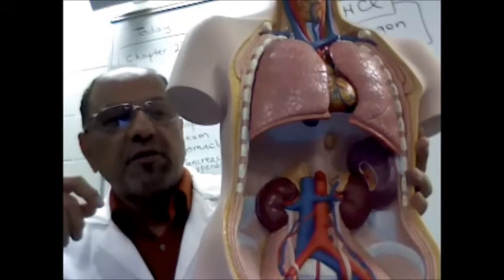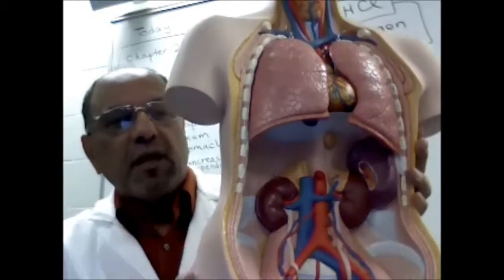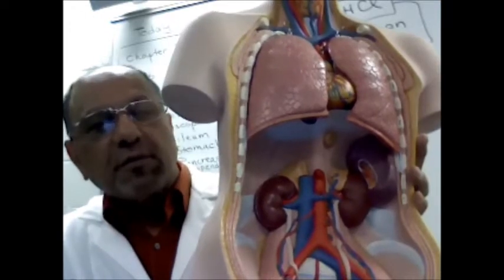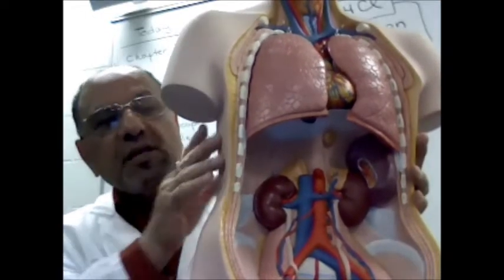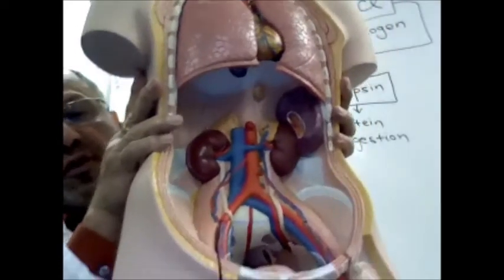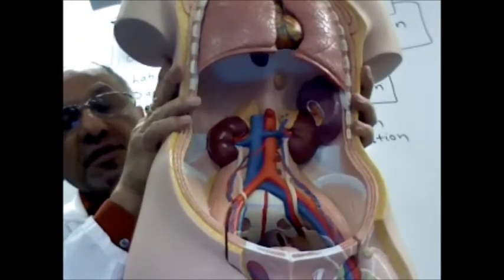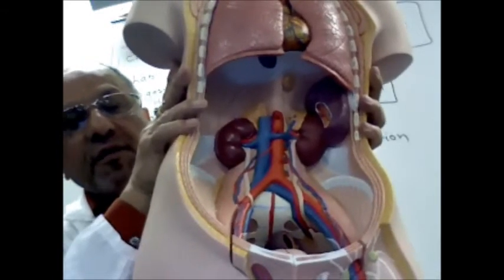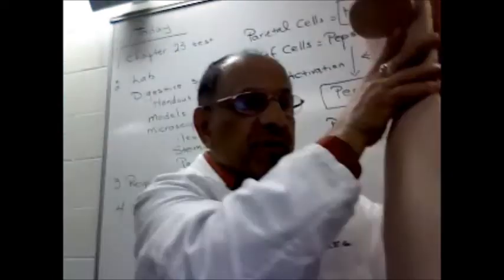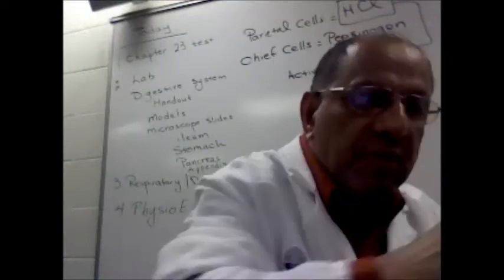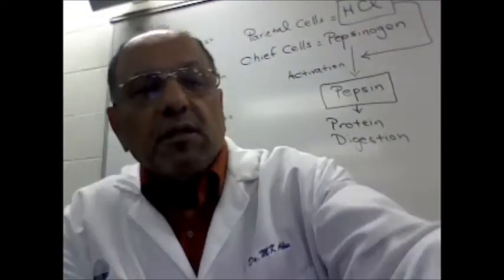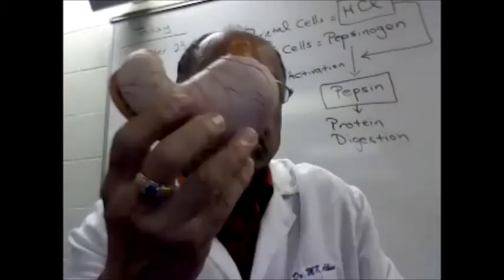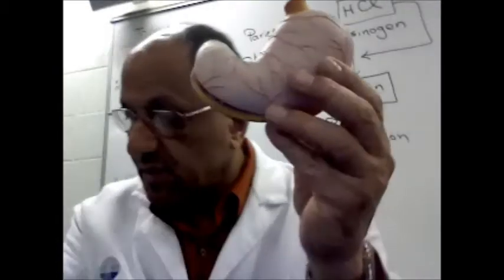Hello, this is the human torso and we're going to use the human torso to learn about the digestive system. I removed all of the organs of the digestive system from the abdominal cavity and we're going to look at these organs separately. The first organ we're going to look at is the stomach.